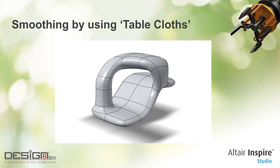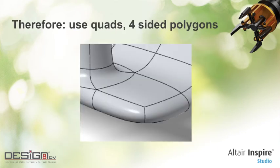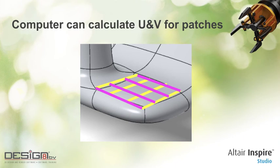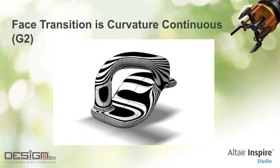Zooming in, the model consists of quads — four-sided polygons — and these patches have U and V directions. The patches are connected in a very smooth transition. We call that curvature continuous, or G2, which means you cannot see a dent in the transition from one patch onto another, thus creating super smooth surfaces suitable for modeling cars, for example.